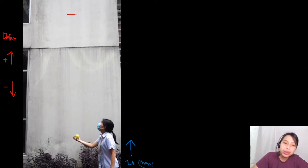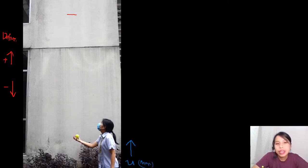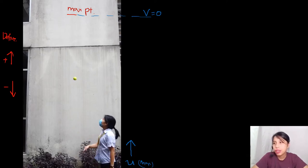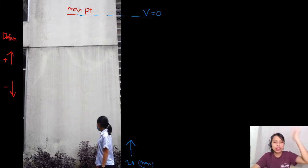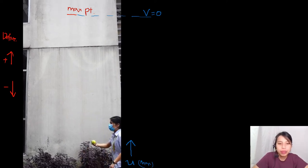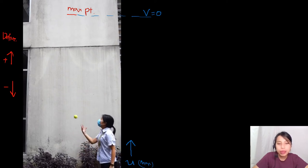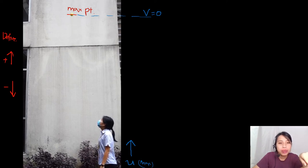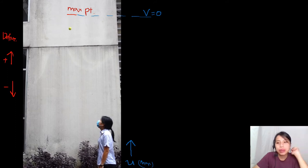At the maximum point — the turning point — the velocity is zero. The ball stops moving because it's going to U-turn and come down. This is very important because students always confuse this: the ball must stop moving first, velocity goes to zero, then it changes direction and comes down.